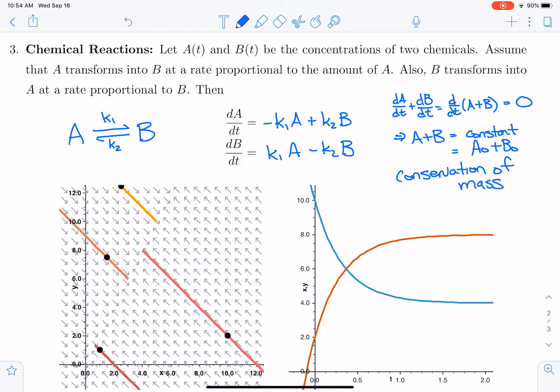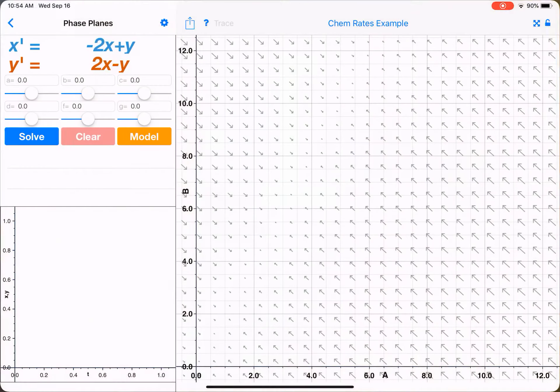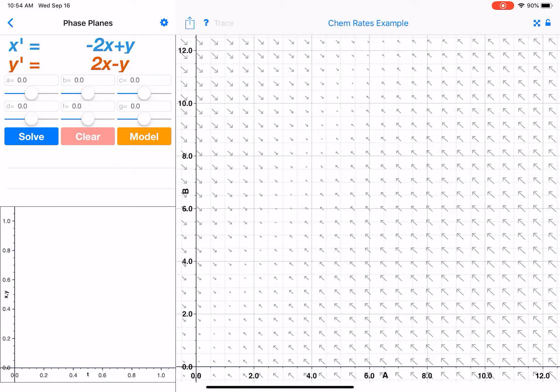Now I'd like to look at the phase plane for this equation, and so we will open up again the phase plane's activity in slope fields. Okay, here I've let k1 be 2 and k2 be 1.